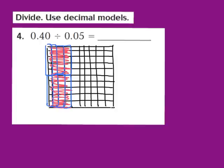The number of same size groups turns out to be the quotient. We had 8 of our same size groups of 5 hundredths, so our quotient here turns out to be the whole number 8. We're going to write down our 8, and that becomes our quotient — found using our decimal models.